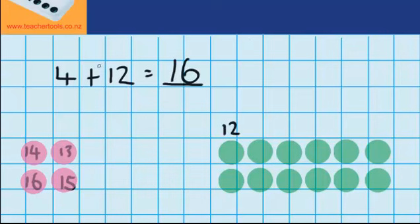Now if we hadn't have changed this question around and counted on from the bigger number, we would have had to count all of these counters here, which means it would have taken a lot longer. So it was much better choosing to count on from this bigger number here.